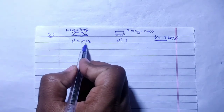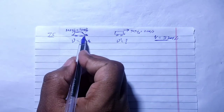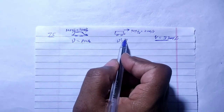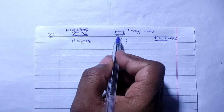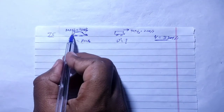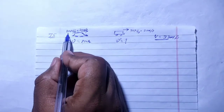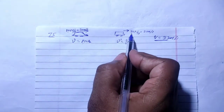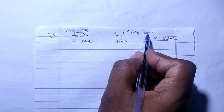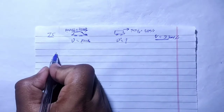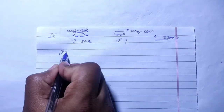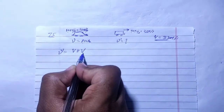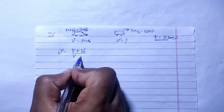The frequency of the rear car is 800 hertz. The speed of 108 km per hour converts to 30 meter per second, and 72 km per hour converts to 20 meter per second. The apparent frequency formula is: V plus or minus speed of observer, divided by speed of sound in air plus or minus speed of source, into frequency of source.